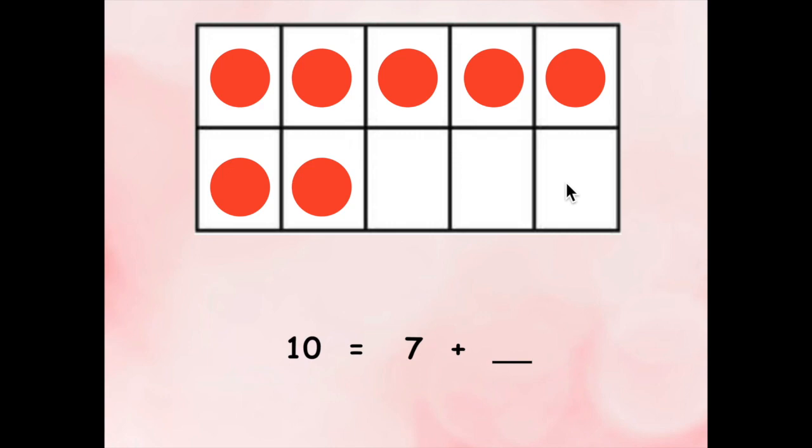Let's count the empty boxes. Ready? One, two, three. I need three more counters to make 10. Now I can fill in my equation. 10 equals seven plus three.